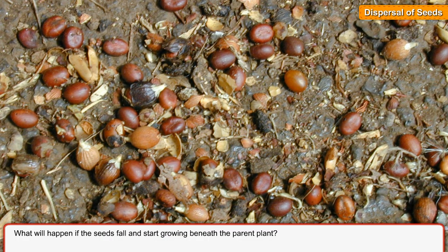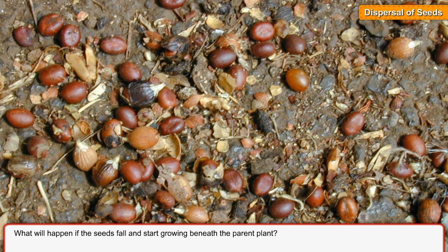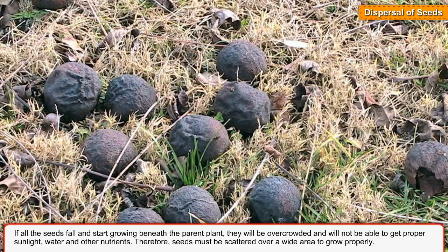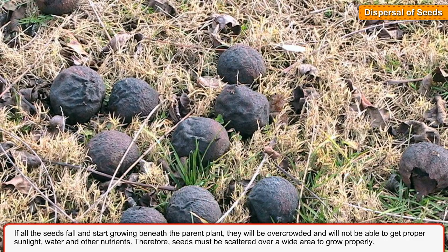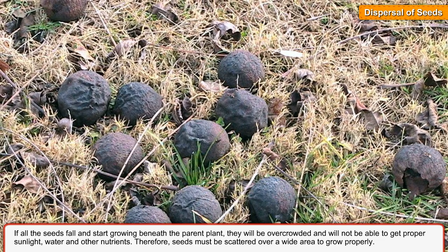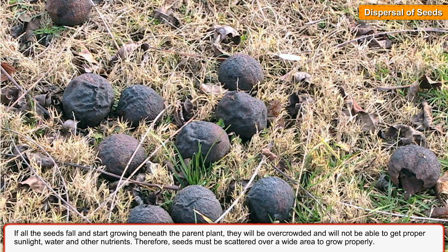What will happen if the seeds fall and start growing beneath the parent plant? If all the seeds fall and start growing beneath the parent plant, they will be overcrowded and will not be able to get proper sunlight, water and other nutrients. Therefore, seeds must be scattered over a wide area to grow properly.